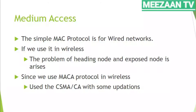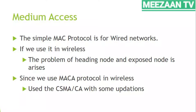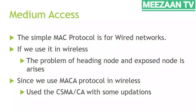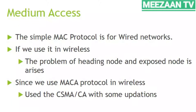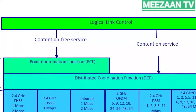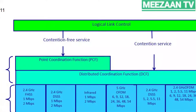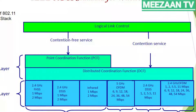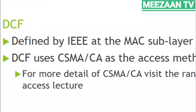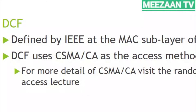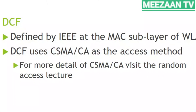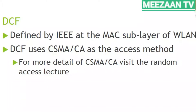For the medium access mechanism of wireless LAN, a simple MAC protocol would cause hidden and exposed node problems. Therefore, the MACA protocol is used. MACA uses the CSMA/CA contention-based multiple access technique. The MAC layer architecture of wireless LAN consists of two functions: the Distributed Coordination Function (DCF), which is totally dependent on CSMA/CA, and the Point Coordination Function (PCF).